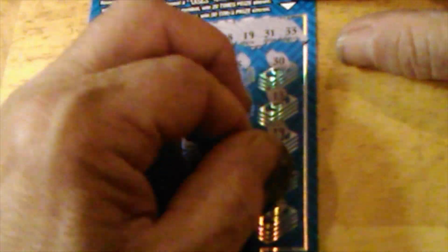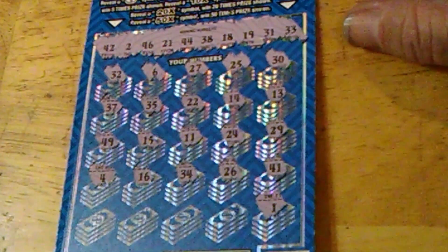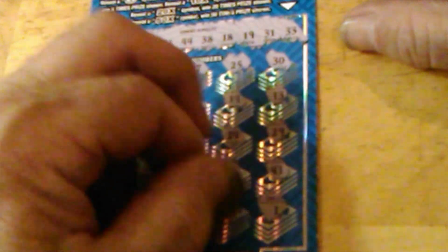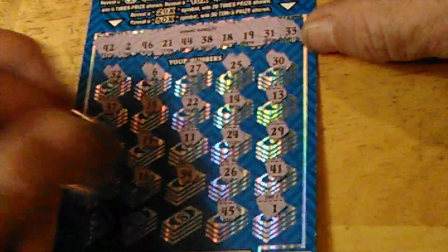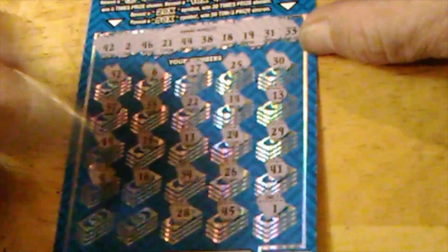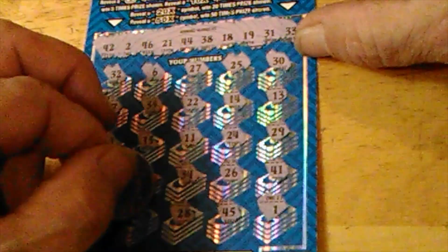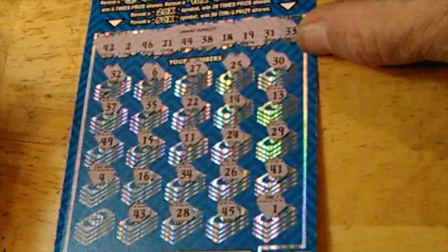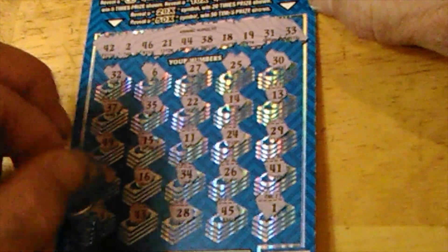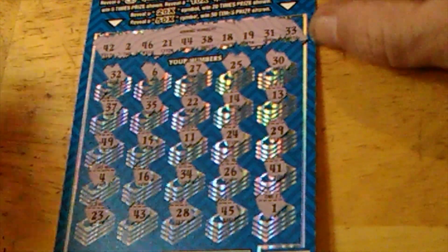Number four. Last row. Number one. Nope. Need a two. 45. I got 44. 28. Need 38 or 18. 43. Nope. Got 42 and 4. And 23. No winner on that one.